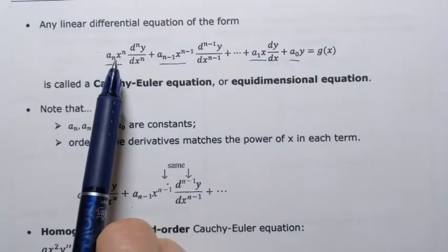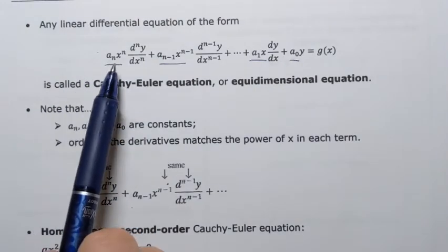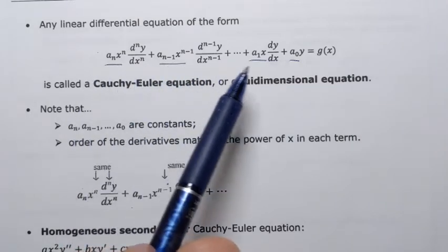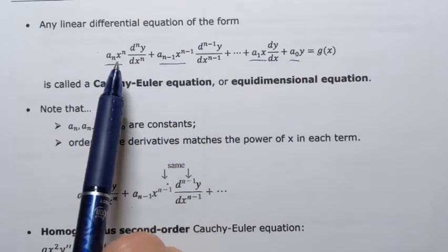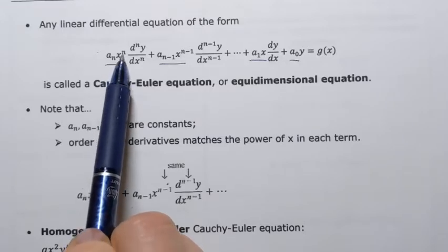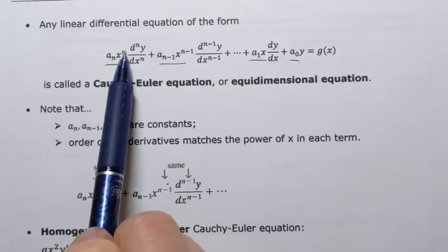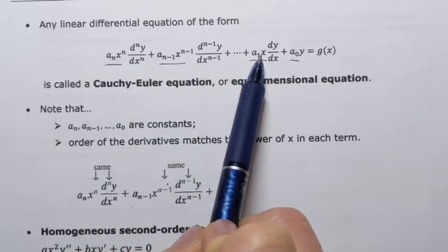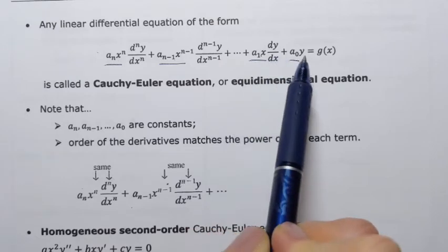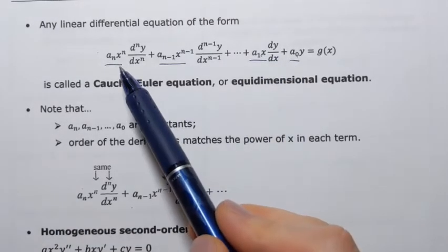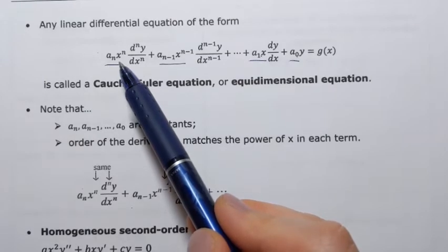We can see that the coefficients contain constants a sub n, a sub n minus 1 — all those a's are constants. Each coefficient also has x raised to a power: x to the power n, x to the power n minus 1, here just x to the power 1, and here x to the power 0.